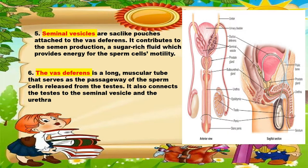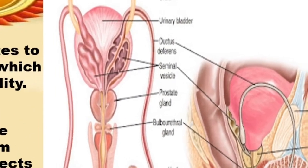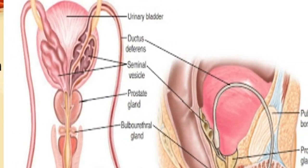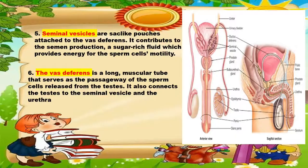The sixth one is the vas deferens. It is a long muscular tube that serves as the passageway of the sperm cells released from the testes. It also connects the testes to the seminal vesicle and the urethra.